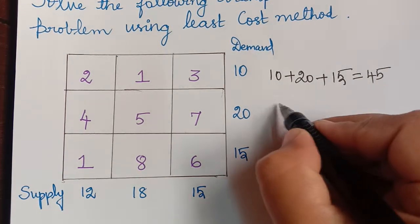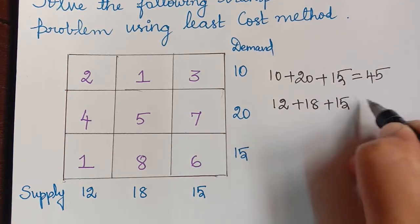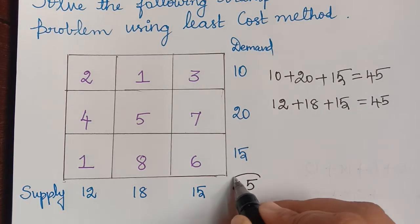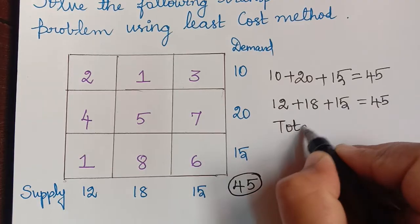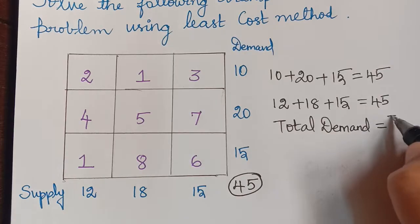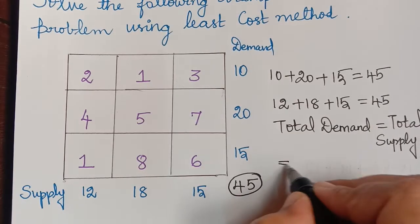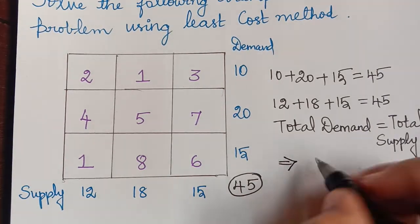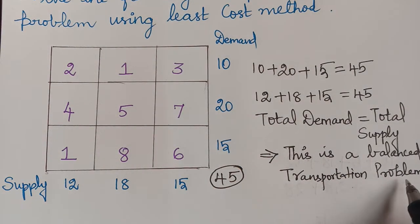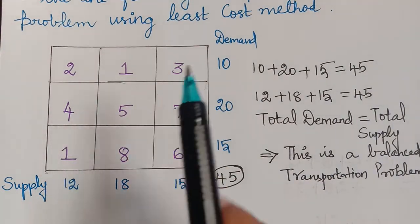Next, we add up all the supply: 12 plus 18 plus 15, which is also equal to 45. Since total demand equals total supply, the given problem is a balanced transportation problem. Now let us start making the allotments.